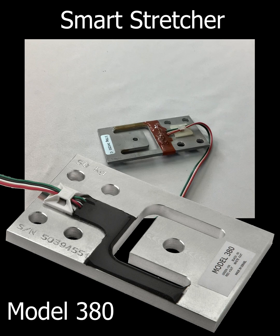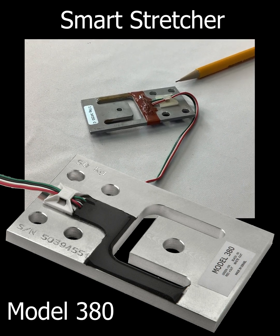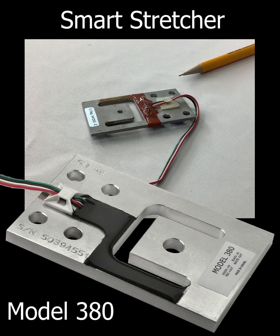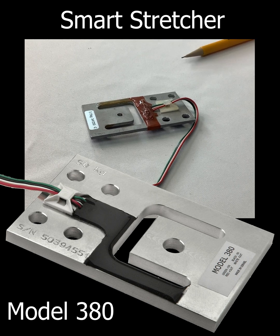This is our Model 380 planar beam. This is a small version. We make a larger one that goes up to 200 kilograms. 150 kilograms is a very popular capacity for stretchers and beds.